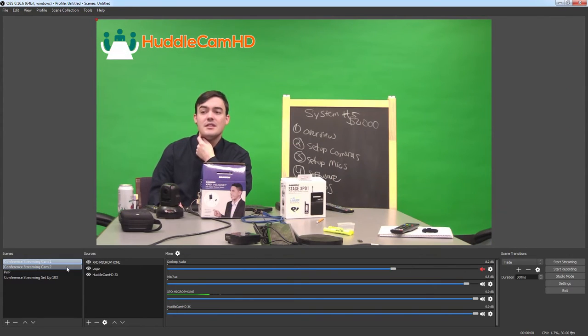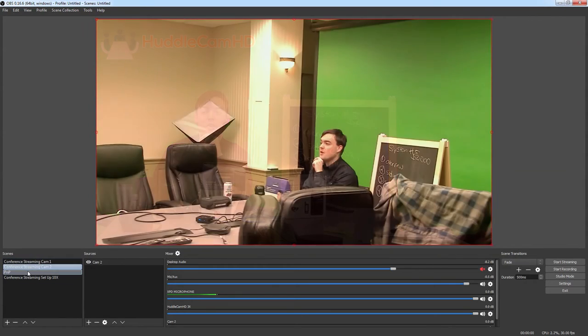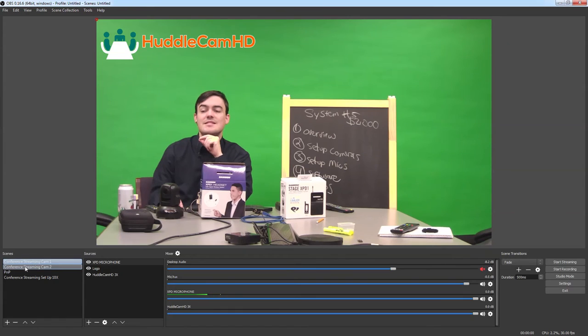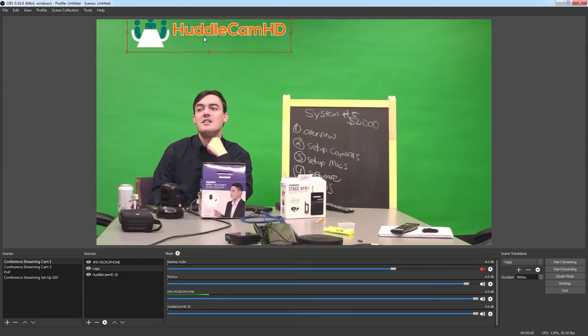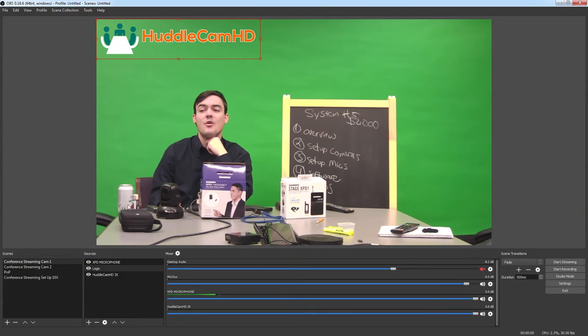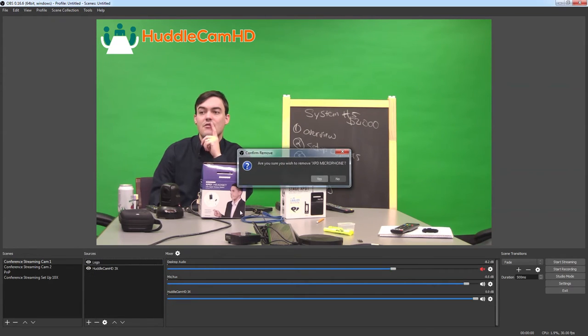And then there's our 20x there. So basically the way this works, if you haven't seen the other videos, you can have scenes and you can transition between the scenes and each scene can hold multiple sources. So you see I have a logo here, maybe you have a logo of your event, a camera and a microphone. So let me just remove the camera and the microphone and re-add it to show you from the beginning.